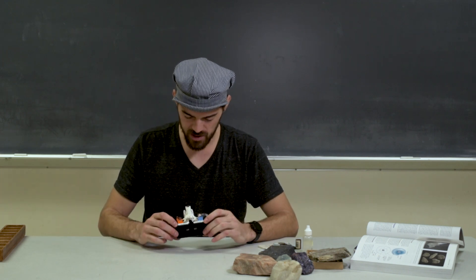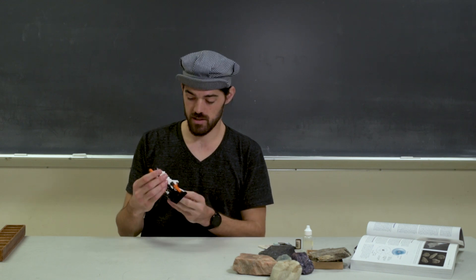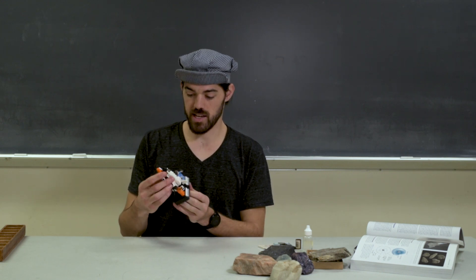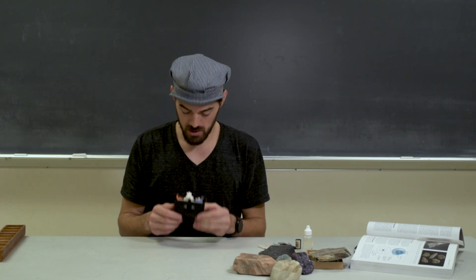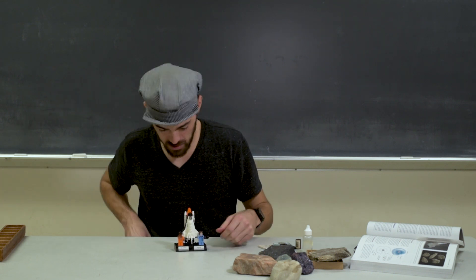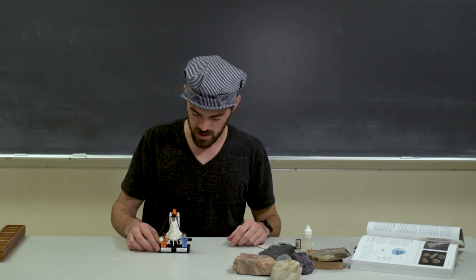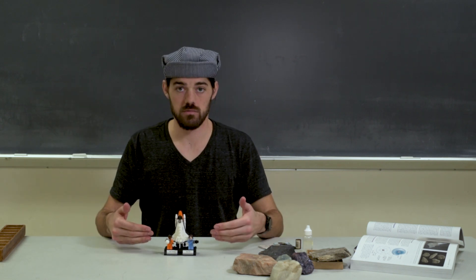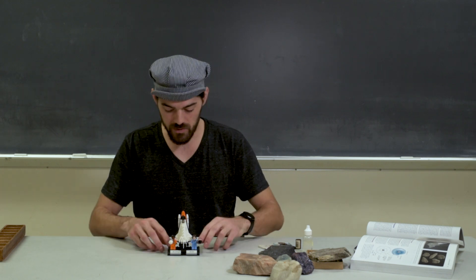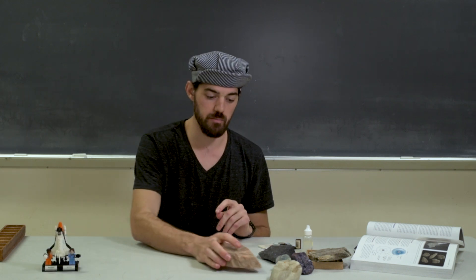Like this badass Lego kit of Sally Ride and Mae Jemison, two awesome women in science who go to space like badasses. So, rock — it's built up from all of these different little parts, i.e. minerals. Just think about minerals as the building blocks of rocks.